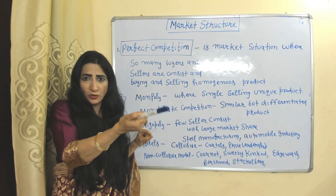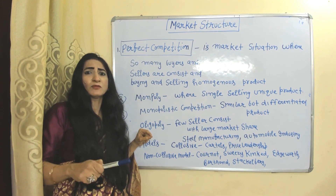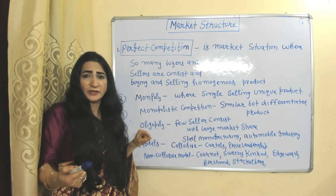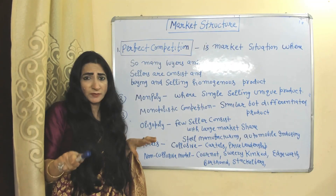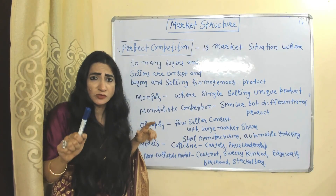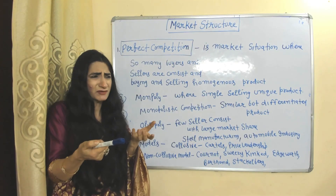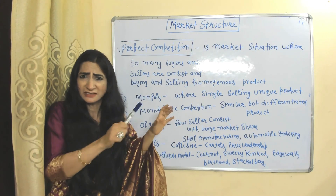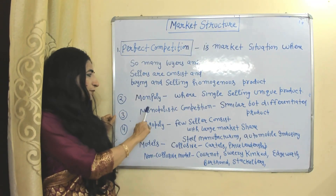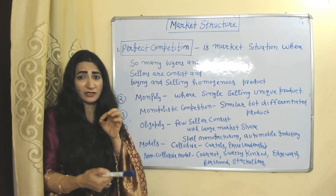Monopoly is a situation where a single seller sells a unique product — for example, Microsoft has a monopoly in personal computer operating systems. During the short run, a monopoly can receive super-normal profit, normal profit, or even sometimes a loss. During the long run, a monopoly will almost always receive super-normal profit, and in very rare cases may receive only normal profit.